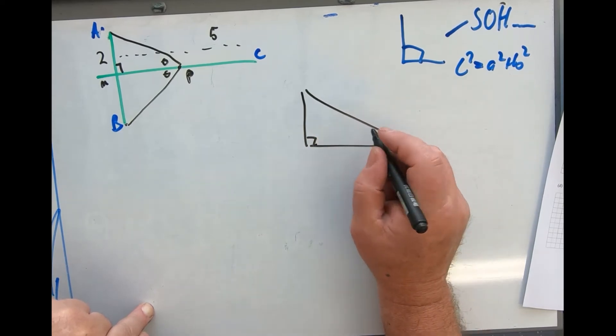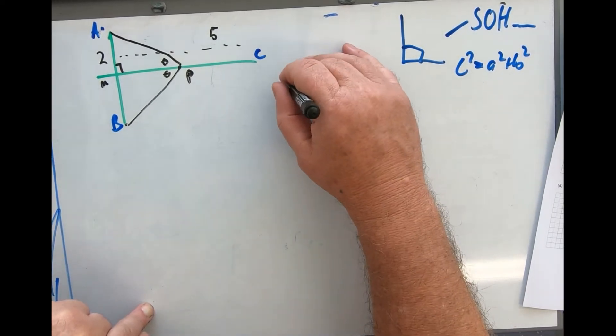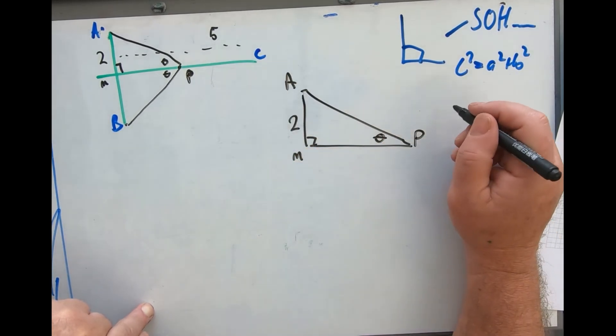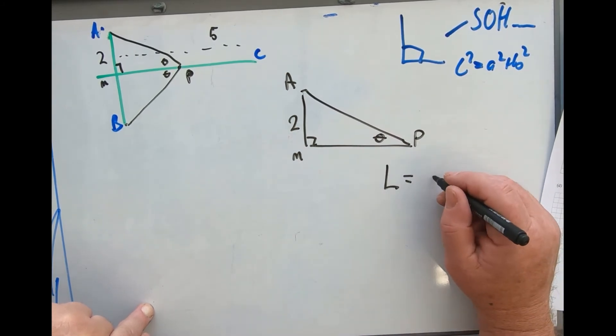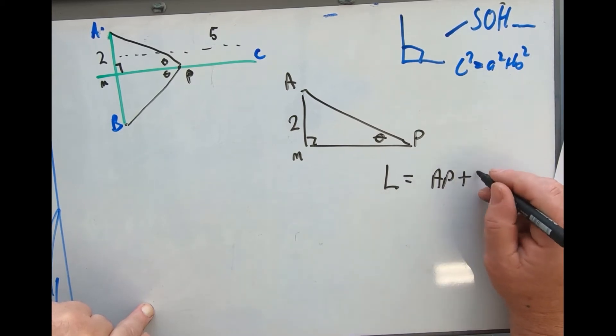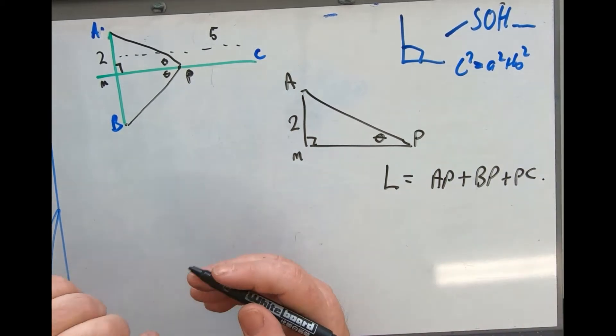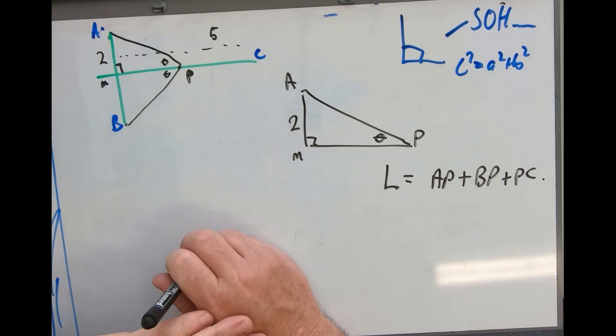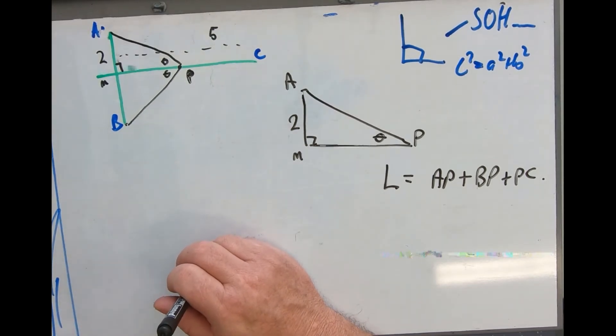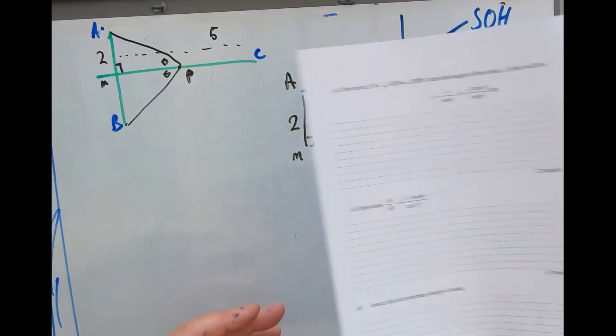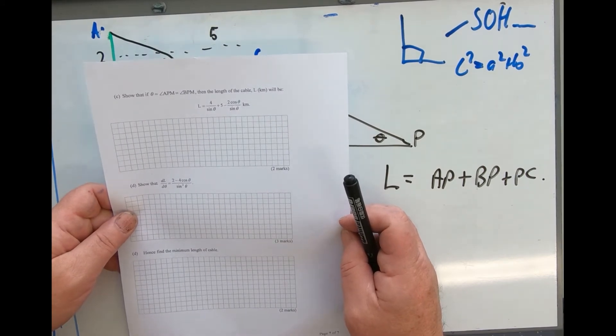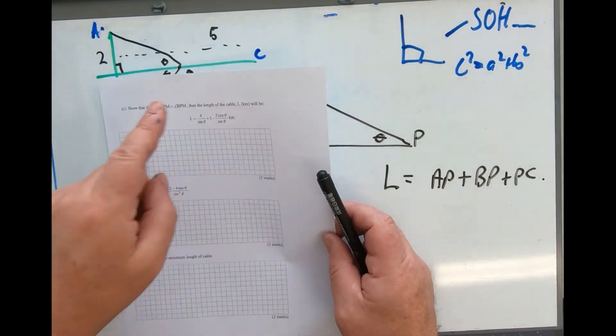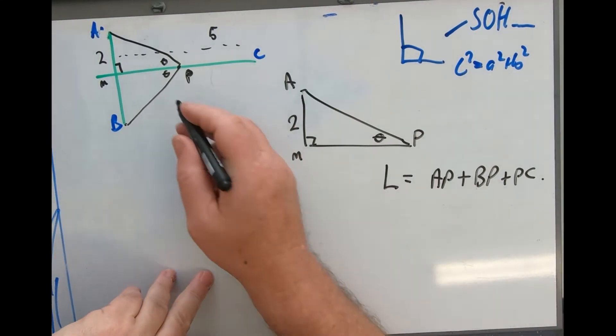I've got an angle and I have a distance of 2, with points A, P, M. What we're looking for is the length L equals AP plus BP plus PC. The next question is: if those two angles are the same, we need to calculate the length.